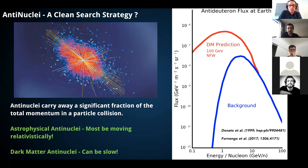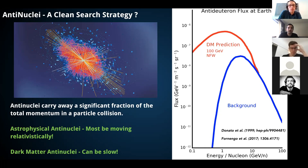Dark matter is different. The two dark matter particles are at rest in the lab frame, they annihilate and produce a bunch of energy — the center-of-mass frame is the lab frame of Earth. So if the dark matter annihilation event has a relatively low energy, say two 30-GeV dark matter particles, it can produce antinucleons that are relatively slow-moving. You can get a large anti-deuteron flux or anti-helium at low energies compared to the astrophysical background. At low energies the dark matter prediction over the astrophysical background is dark matter dominant by almost a factor of 10⁵ — finding one of these events could be a smoking-gun signature for dark matter.